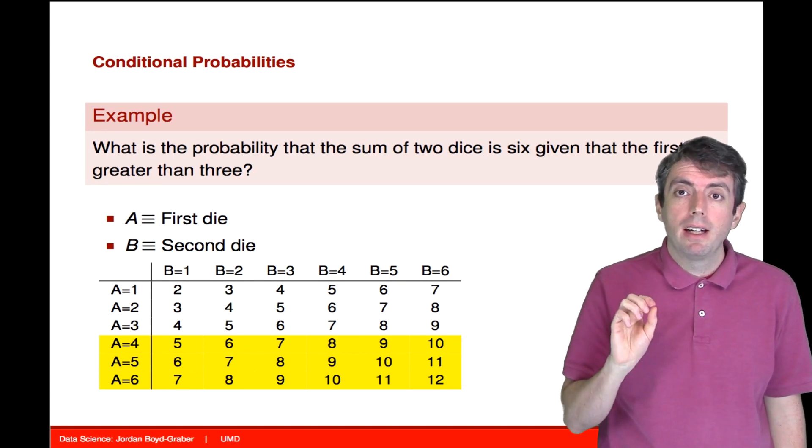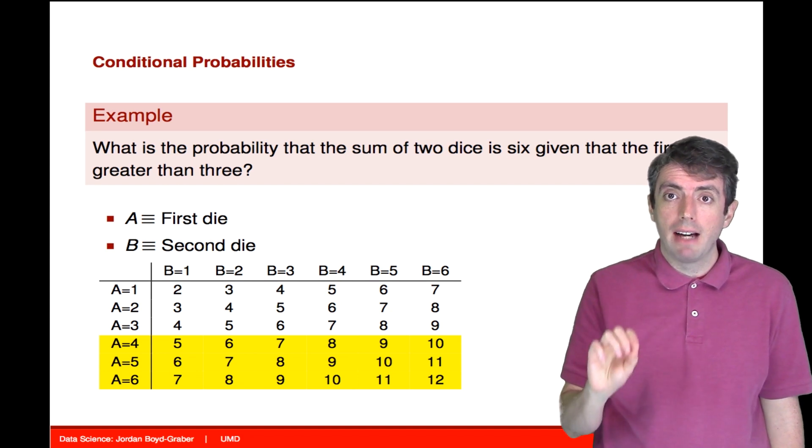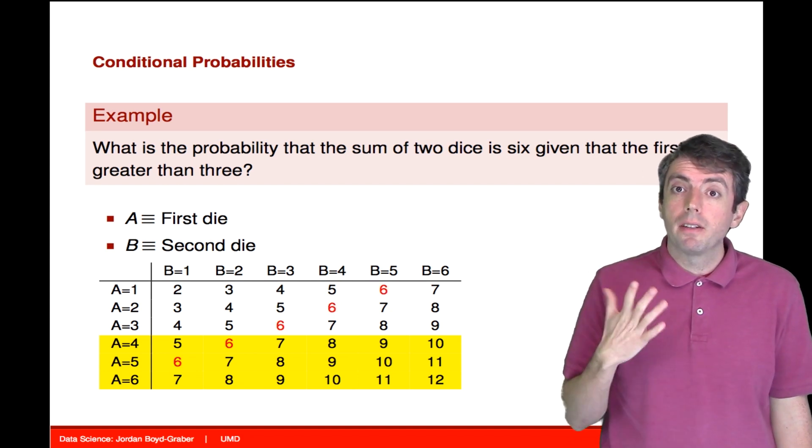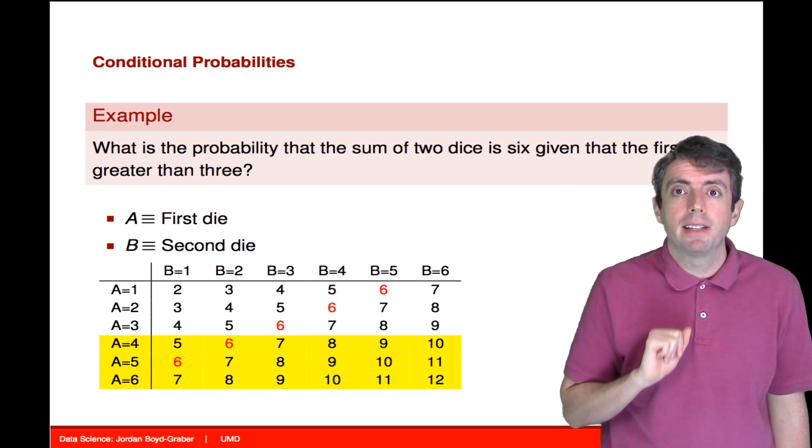And now, from that, we can look at what are the outcomes where you have six as the total. Now there are five different ways for this to happen, but only two of them land inside the yellow region.